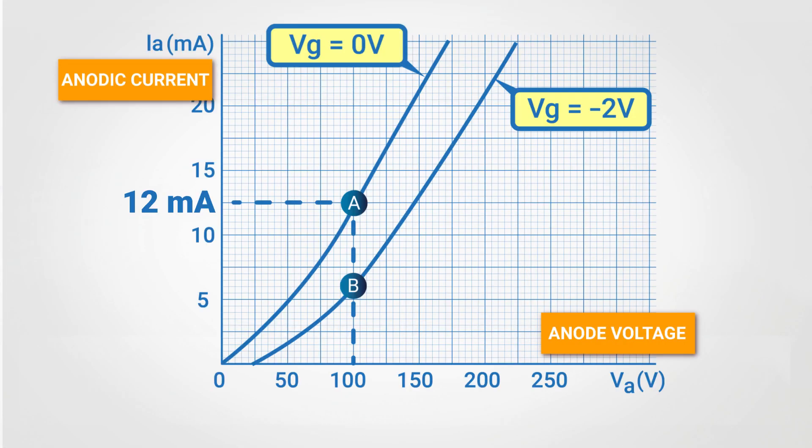Looking at this scheme, we can observe a very important fact. As we've already seen, we can reduce the anodic current from 12mA to 6mA by just bringing the grid voltage from 0V to minus 2V and thus leaving the 100V anode voltage unchanged.